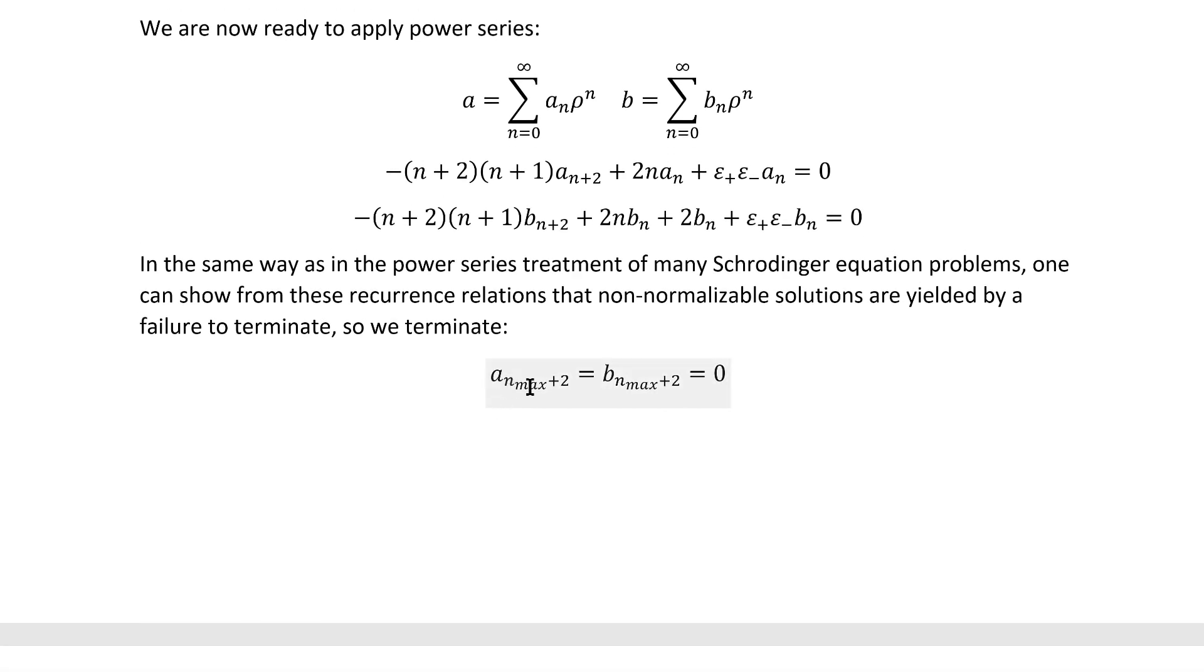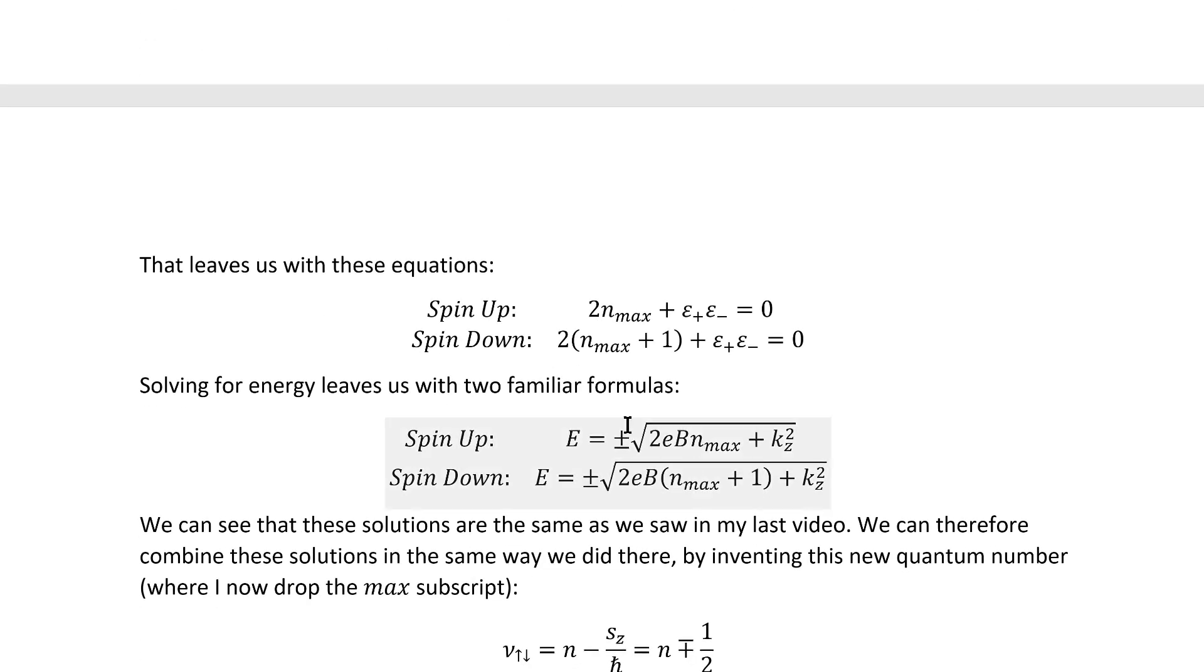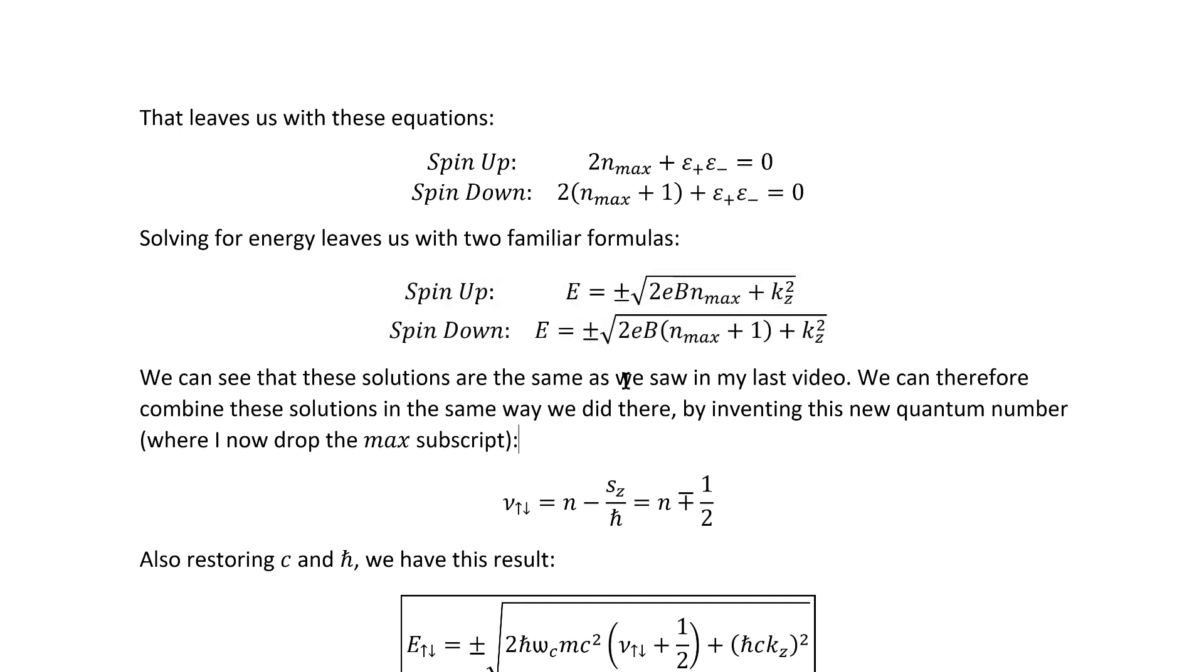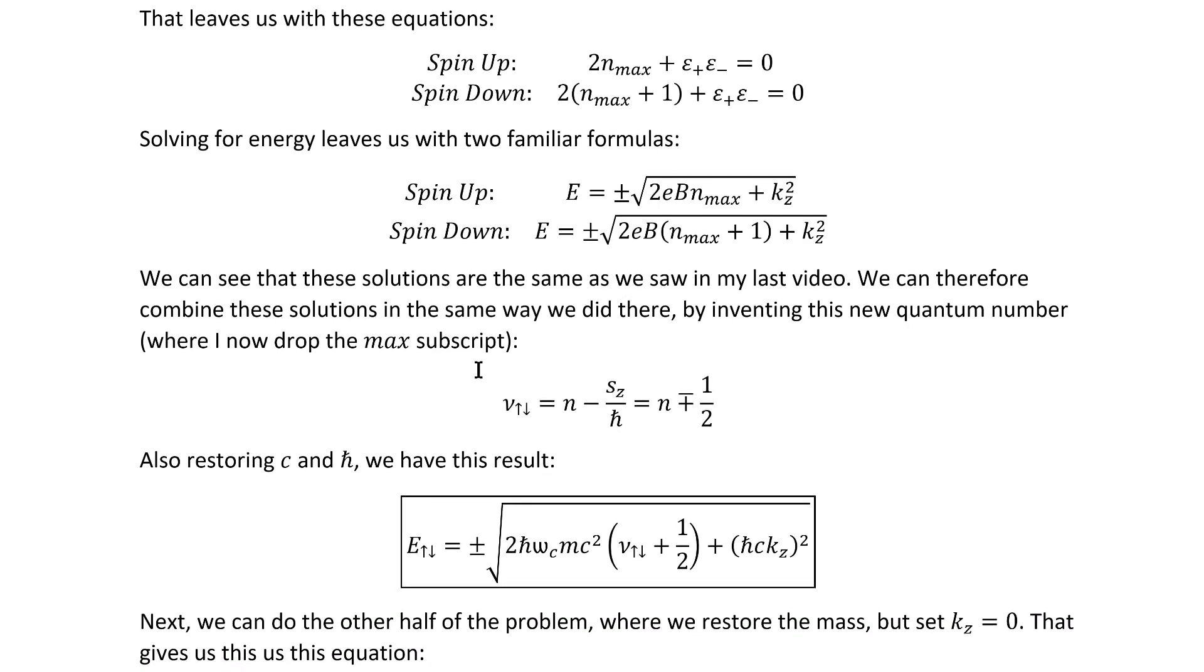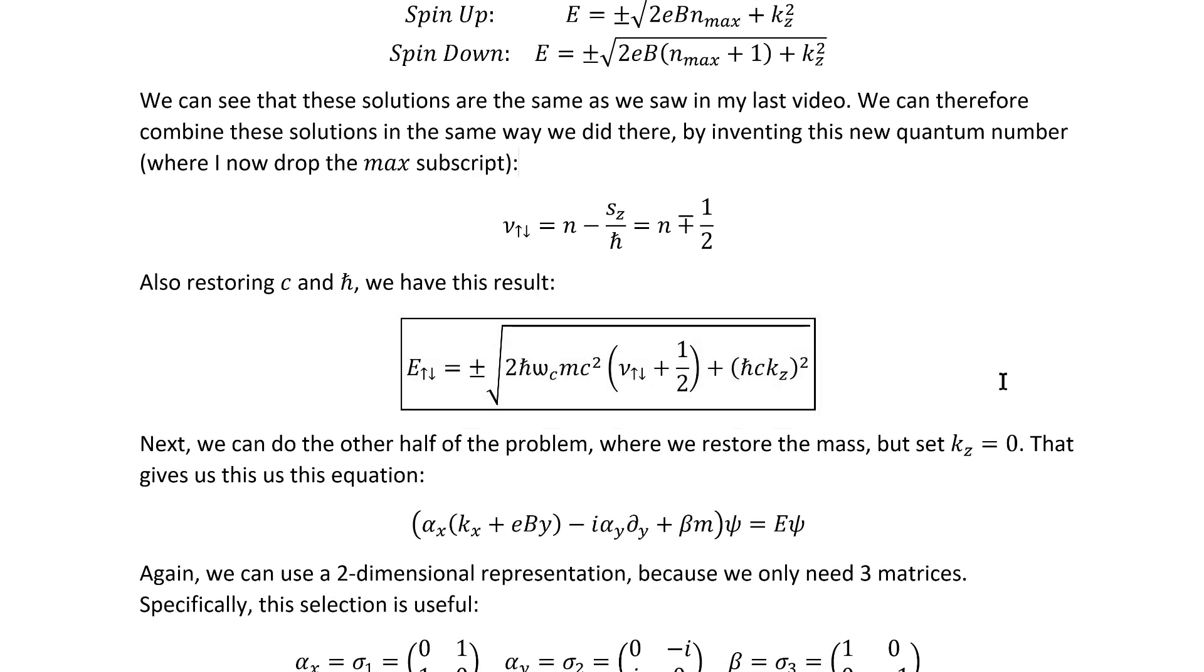Notice that we have to do n max plus 2 given how these recurrence relations work. We get n plus 2 from the nth one. Imposing these on our recurrence relations then gets us these equations. If we solve them out, we arrive at these energy eigenvalues and we see that they do match the results from my last video. We can therefore combine these solutions as we did there by inventing the same new quantum number. We arrive here.